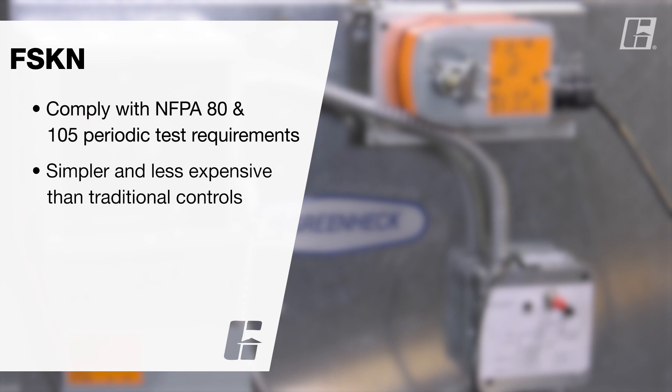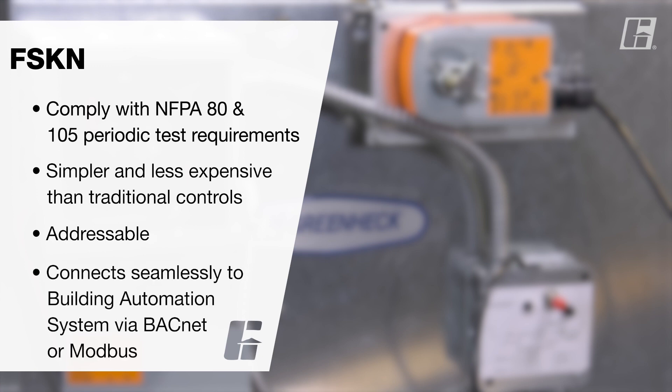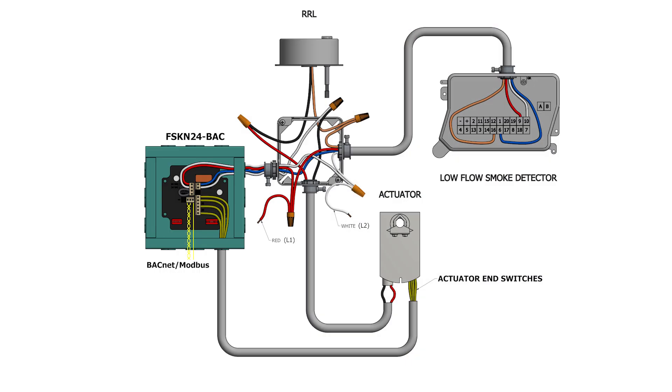The FSKN allows building owners to easily comply with this code required testing without the need for disruptive visual inspections or expensive control methods. This innovative new addressable device communicates via BACnet or Modbus allowing each damper's position to be controlled and monitored from a building automation system or fire alarm panel.